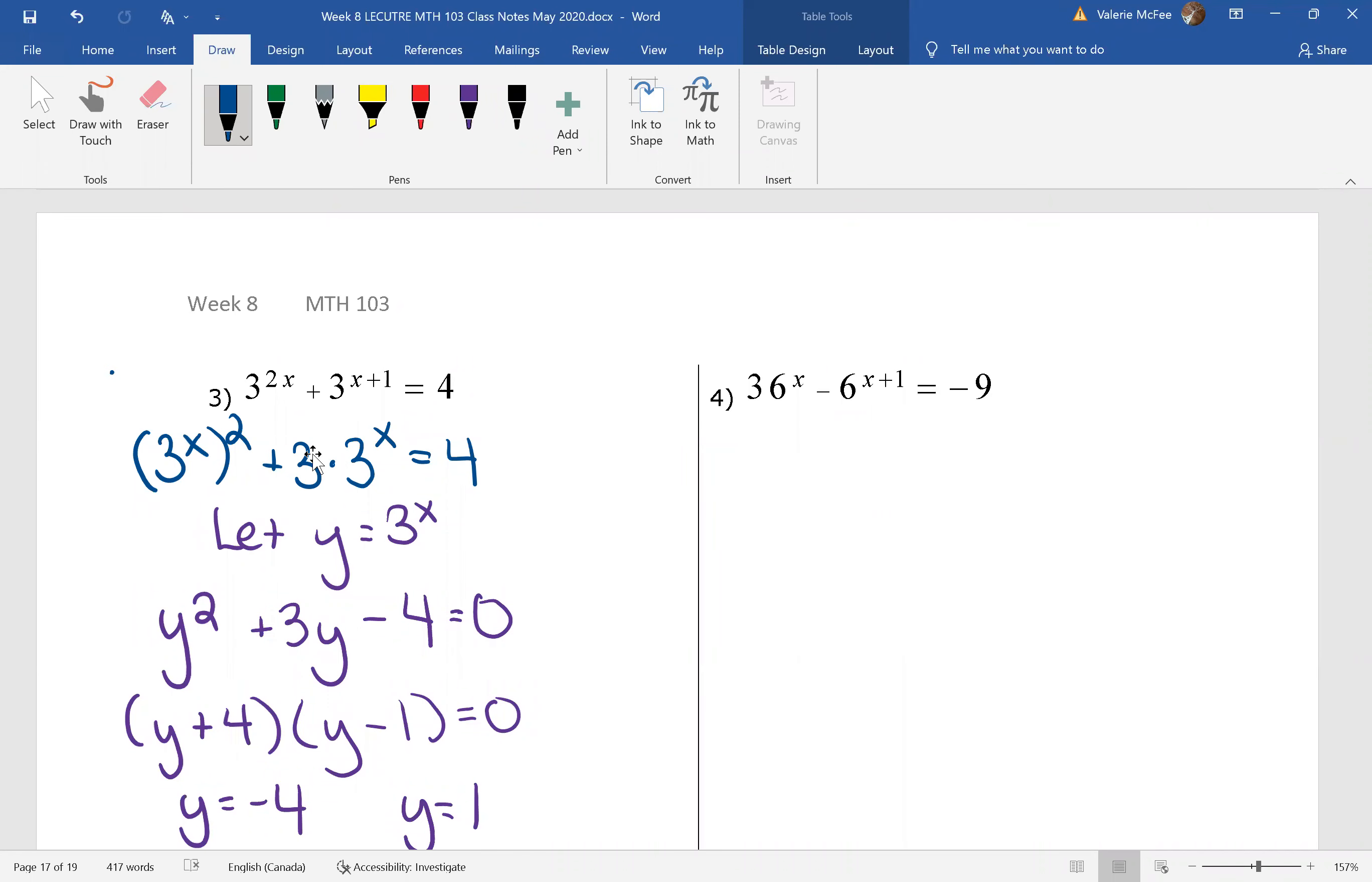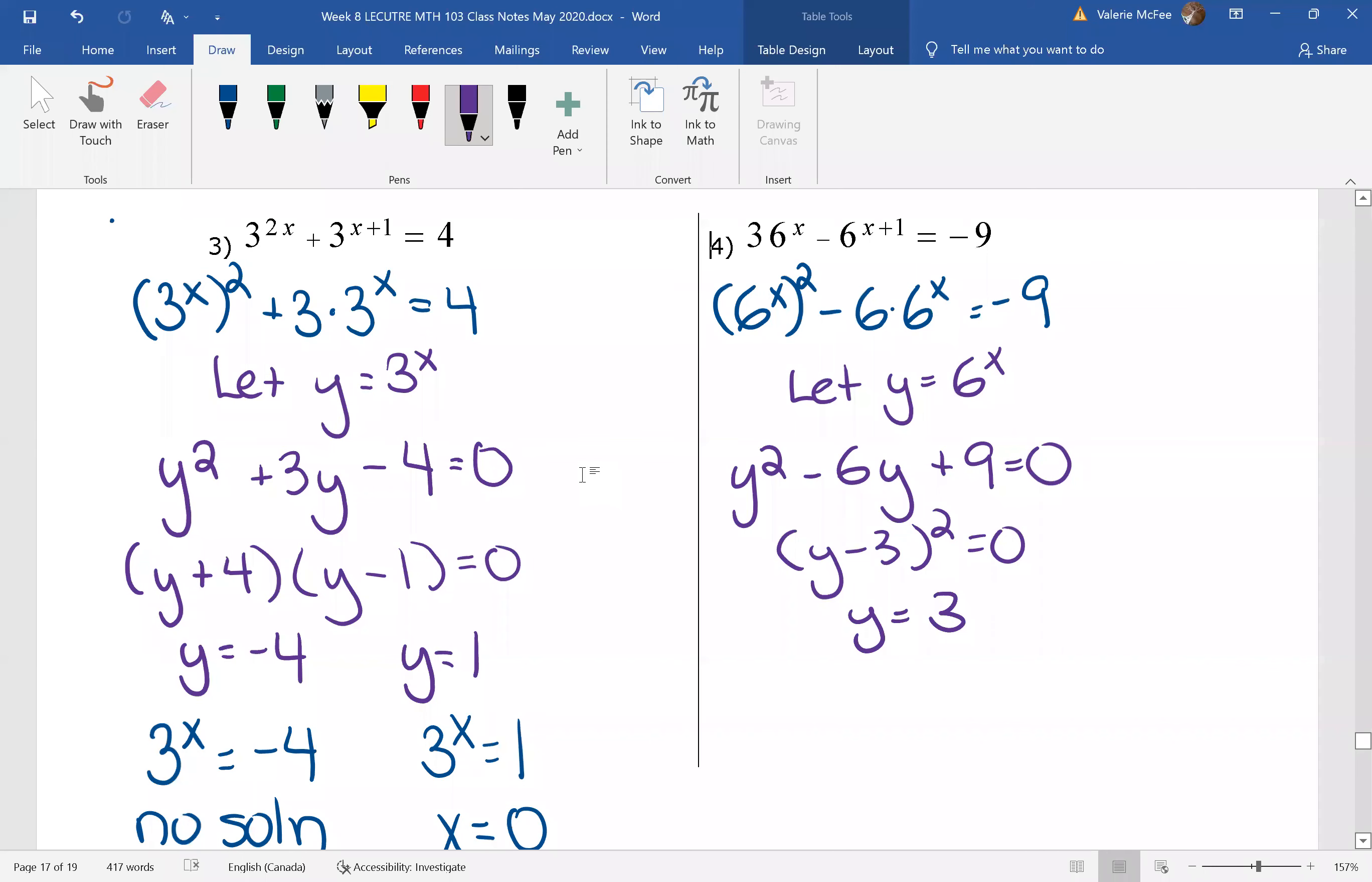Why don't you try question 4. You should have found that y is equal to 3. So 6 to the power of x is also equal to 3. We have x in only one exponent. We can change this to log form. Log base 6 of 3 equals x. If you have any difficulty with changing the very first step, go back to examples 1 and 2 where I talk slowly and in detail about how to do that.